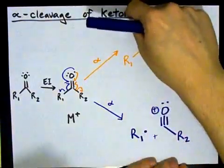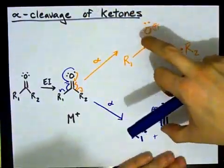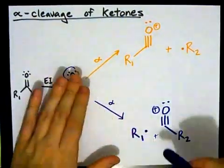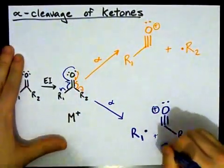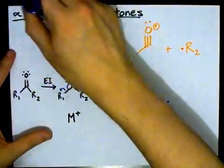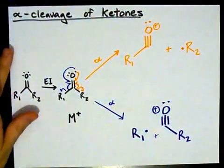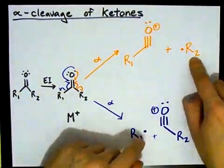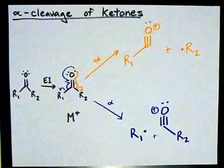You will end up when you cleave ketones with two fragments, one with one alkyl group chopped off and one with the other alkyl group chopped off. This is what happens when you have alpha cleavage of the ketones. Depending on how big your R1 and your R2s are, that will tell you the spread of your peaks in the mass spectrum.